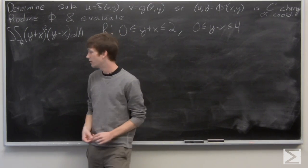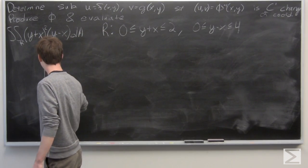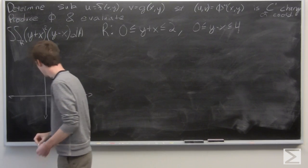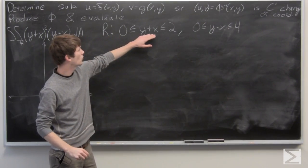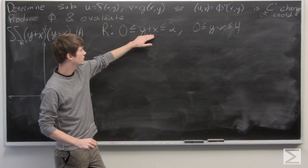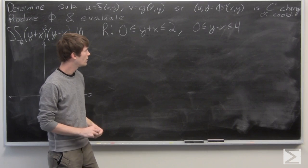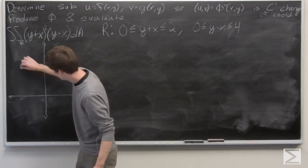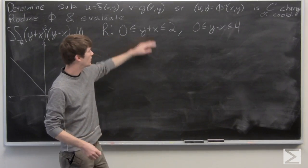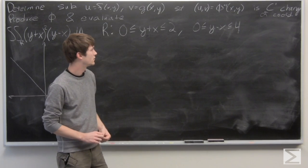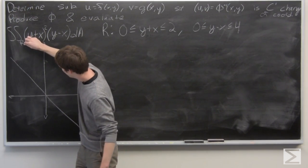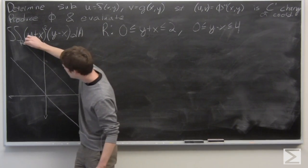First, let's sketch our region R just to get an idea of what it looks like. We know that y + x is greater than or equal to 0 but less than or equal to 2. Looking at the boundary: when y + x equals 0, we're along the line y = -x. And when y + x equals 2, we have y = 2 - x, so when x = 0 we're at the point 2, and we have slope negative 1. These are two parallel lines.